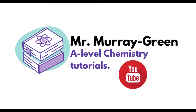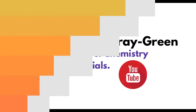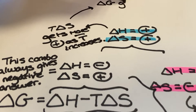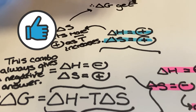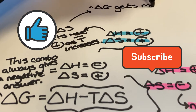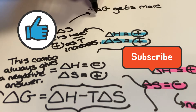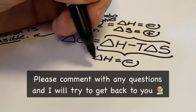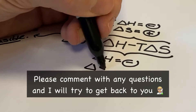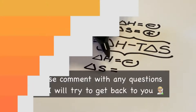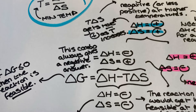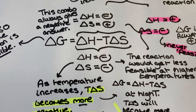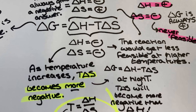Hi there and welcome back to my channel for another video on the free energy equation. If you do find this video helpful then please give it a thumbs up, consider subscribing to stay updated and share this video with other A-level chemistry students. In this video we're going to take another look at the free energy equation, which is delta G equals delta H minus T delta S.